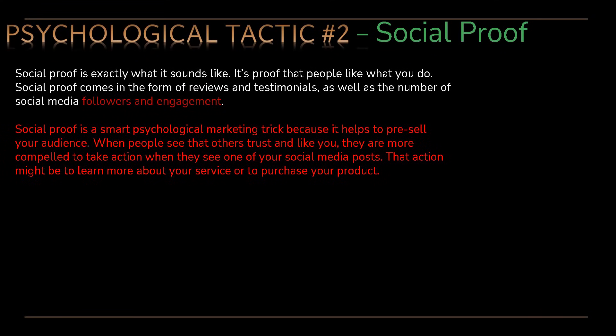Tactic number two is called social proof, and this is exactly what it sounds like — basically it's proof that people like what you do. Social proof comes in the form of reviews and testimonials as well as the number of social media followers and engagement someone may have. Social proof is a smart psychological marketing trick because it helps to pre-sell your audience. When people see that others trust and like you, they are more compelled to take action — that action might be to learn more about your service or to purchase your product.